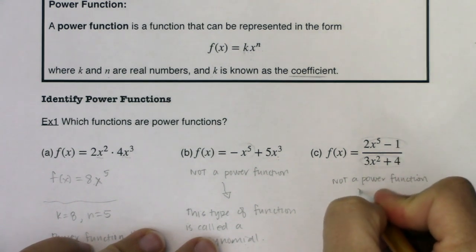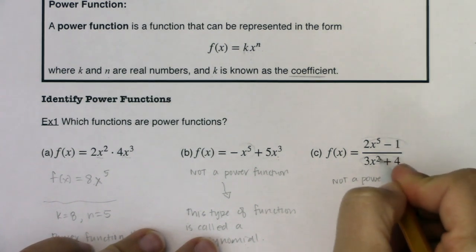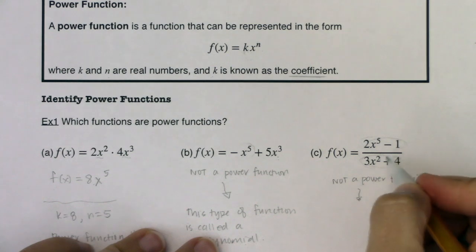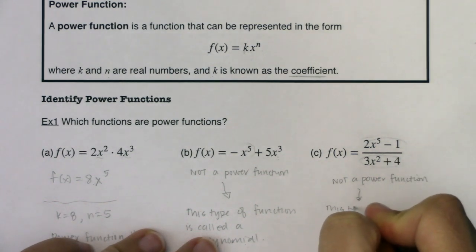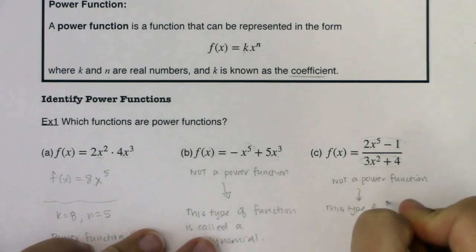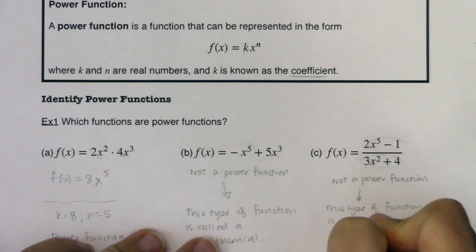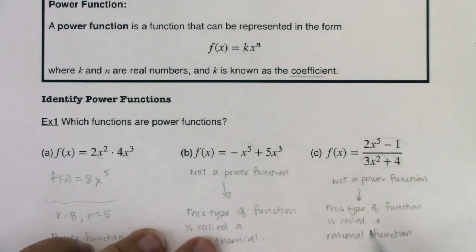And I want to make sure I specify this, that this type of function is called a rational function. It's a rational function because it is a ratio of polynomials, right?